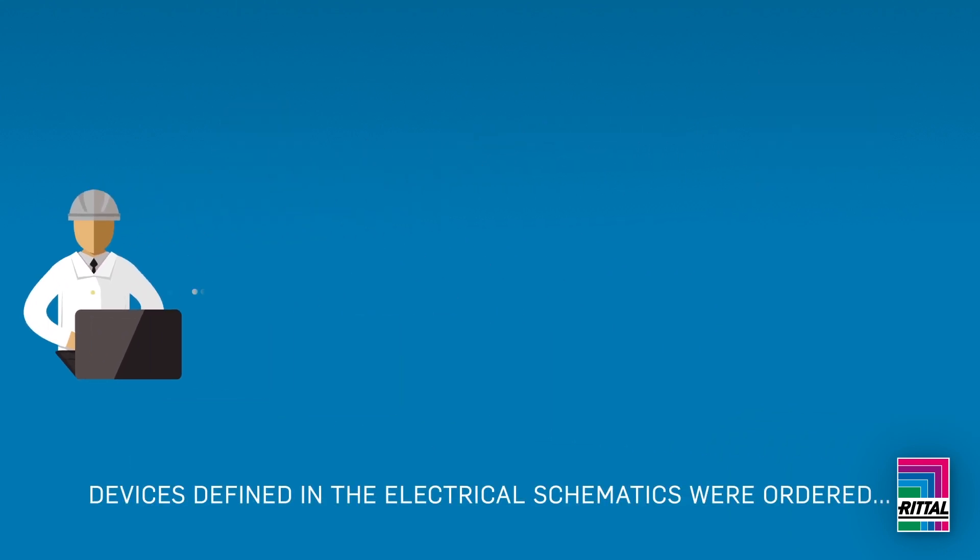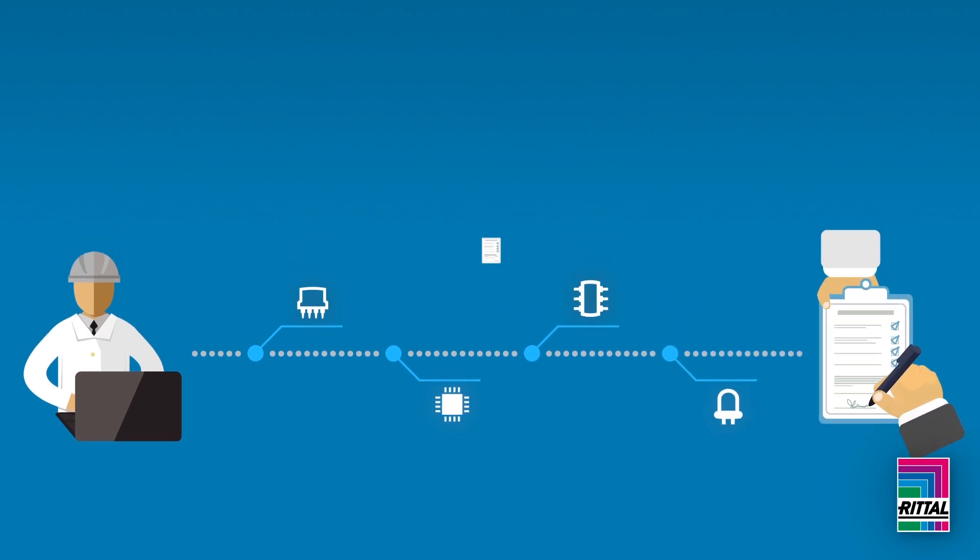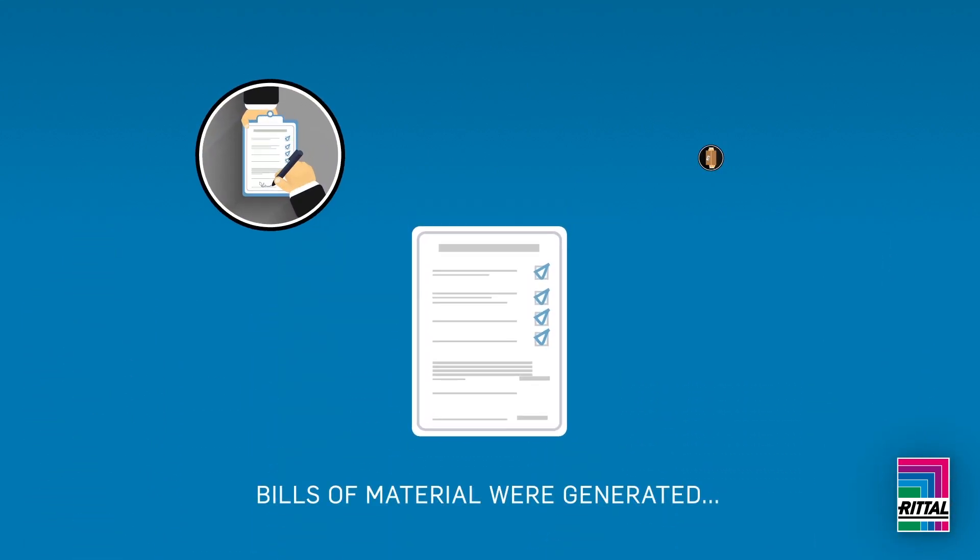Between engineering and purchasing, all devices defined in the electrical schematics were ordered. Bills of materials were generated, purchasing departments often recreating orders for each device and supplier.